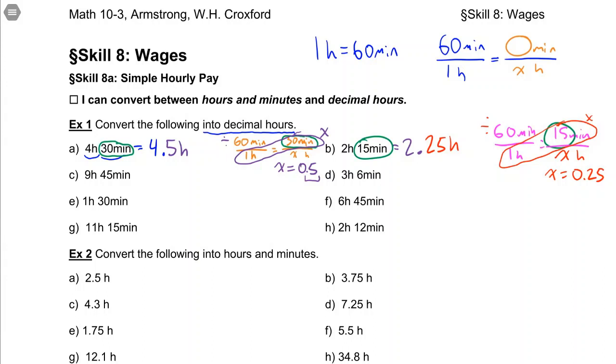This one here, 45 minutes. I'll show you two more and then you guys can try the ones underneath. So this one here, we're going to do 60 min per 1 hour is 45 minutes per our unknown number of hours. And when you cross multiply and divide, you get 0.75 hours.